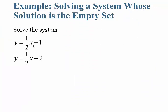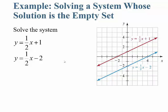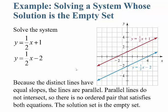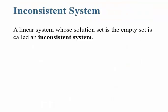Consider solving y = (1/2)x + 1 and y = (1/2)x - 2. Notice these two lines have the same slope but different y-intercepts. When we graph these lines, they never intersect. Because distinct lines have equal slopes, the lines are parallel, and parallel lines do not intersect. There is no ordered pair that satisfies both equations, so the solution set is the empty set — no solution. Parallel lines produce no solutions. A linear system whose solution set is empty is called an inconsistent system.